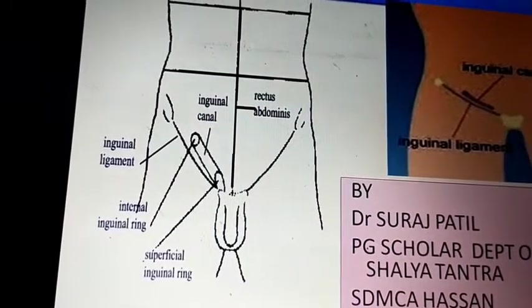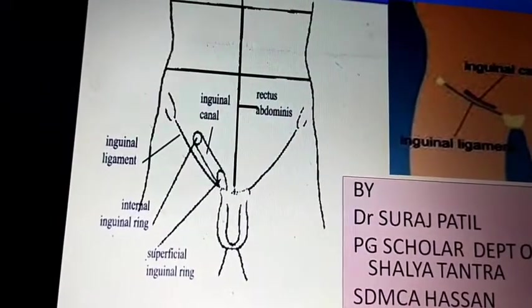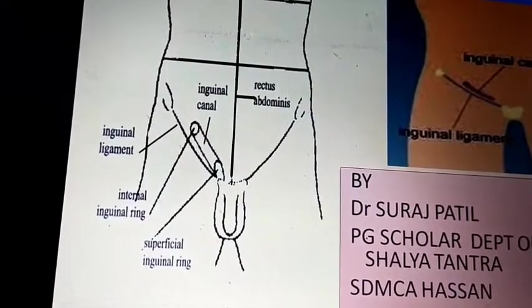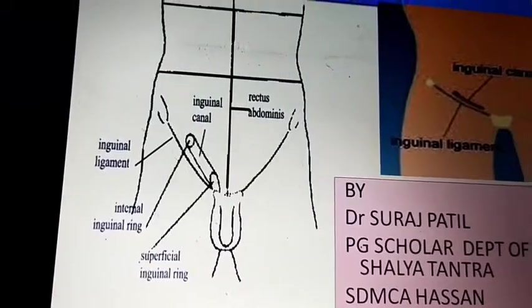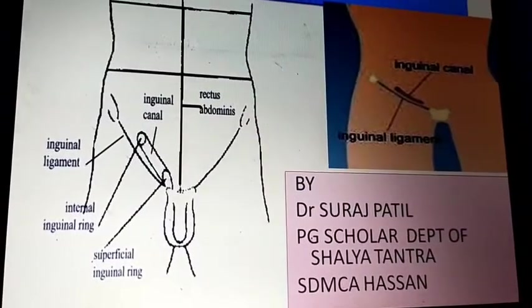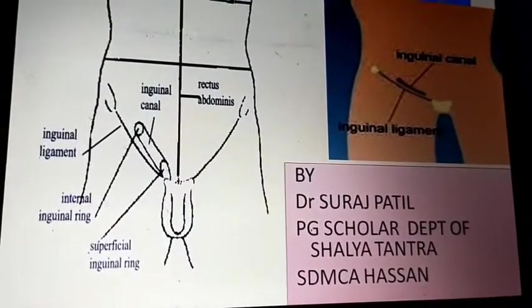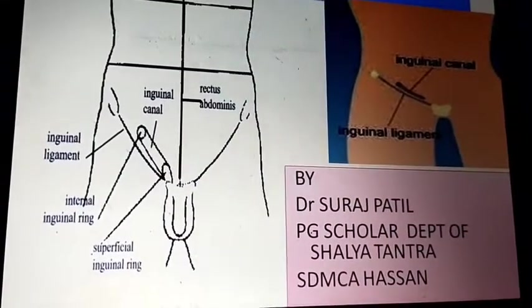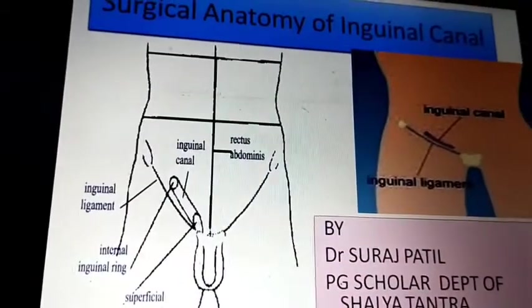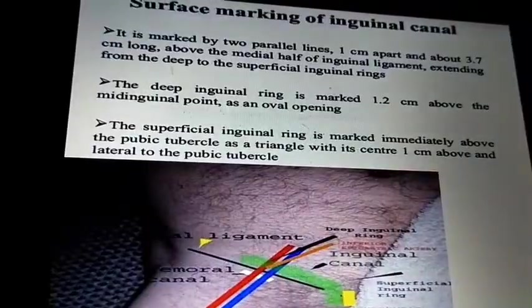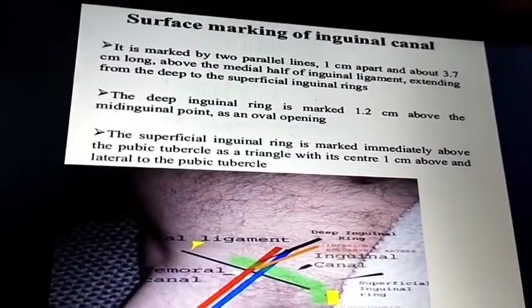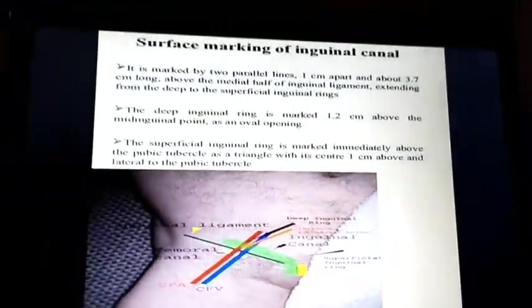The inguinal canal was formed due to the process of testicular descent. In females, the inguinal canal is also present, but it transmits the round ligament of the uterus rather than the spermatic cord.